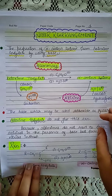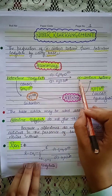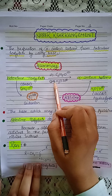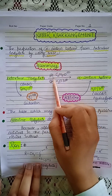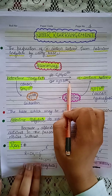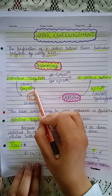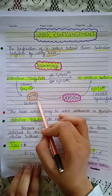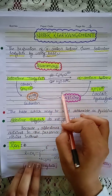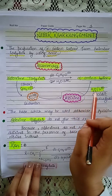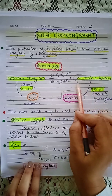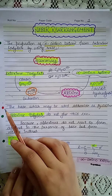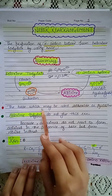Let us first discuss the summary of the reaction. In this reaction, we get alpha-aminoketone from ketoxime tosylate by using two steps: the first is the action of base, and the second is acidic hydrolysis. When the base reacts with ketoxime tosylate, it forms a carbanion intermediate, then this intermediate converts into azirine, and then this azirine upon acidic hydrolysis gives alpha-aminoketone.